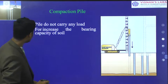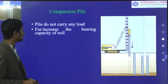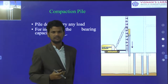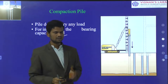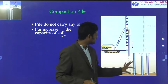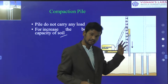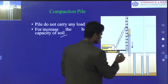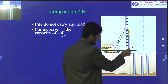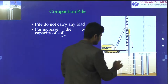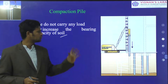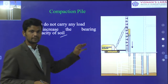Next, we are having the compaction pile. Compaction piles do not carry any load directly but increase the bearing capacity of the soil. They are used where the soil strata is weak with very low unit weight. We insert temporary piles which compact the surrounding soil. By using driven technology, while inserting the piles, the surrounding soil gets compacted and carrying capacity increases. After that, end bearing or friction piles are inserted to increase the load carrying capacity further.